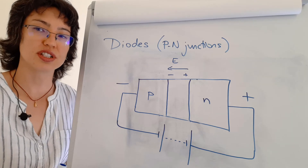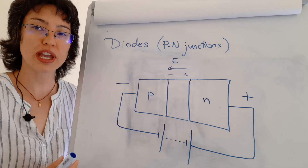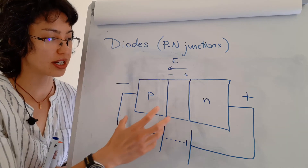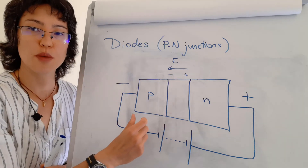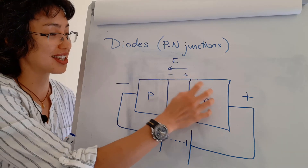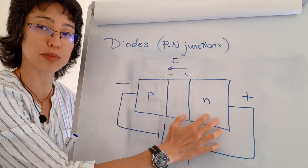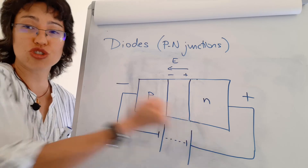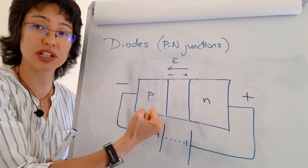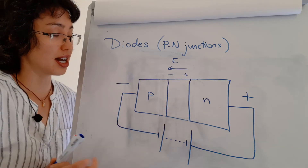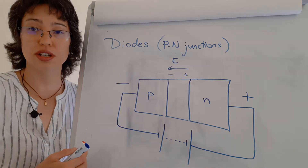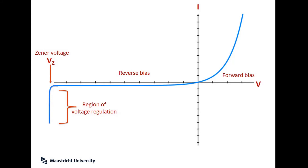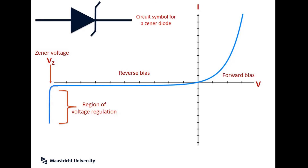There's another type of breakdown called Zener breakdown. In very heavily doped PN junctions in reverse bias, the electric field becomes so great that electrons involved in bonding — in the valence band or atomic orbitals — get ripped out of their orbitals by the field and pulled across, also causing breakdown. Looking at the IV characteristics of a heavily doped diode that breaks down this way, the breakdown voltage in reverse bias is very constant. We design diodes that exploit this, called Zener diodes, which can be used as voltage regulators.